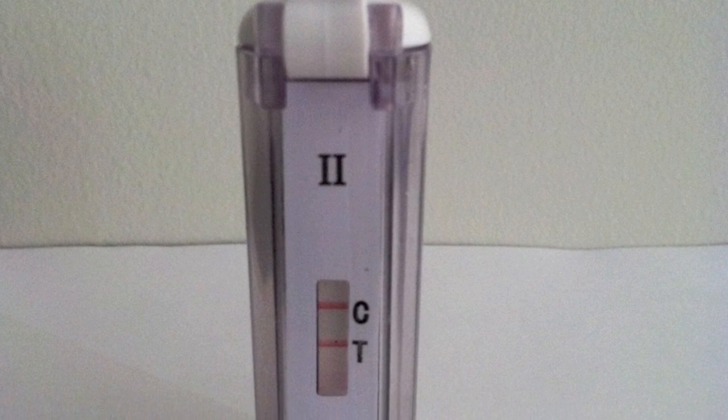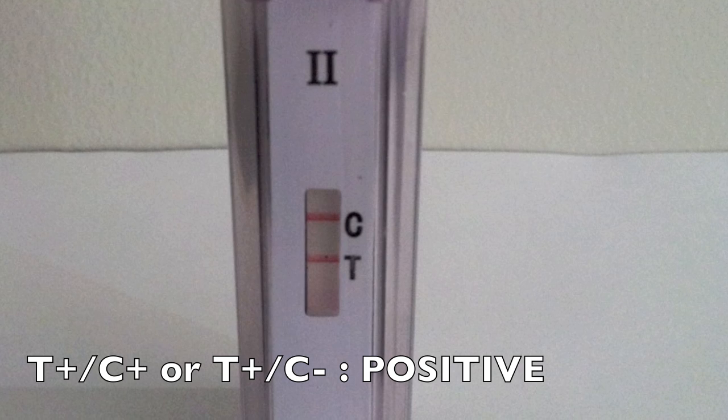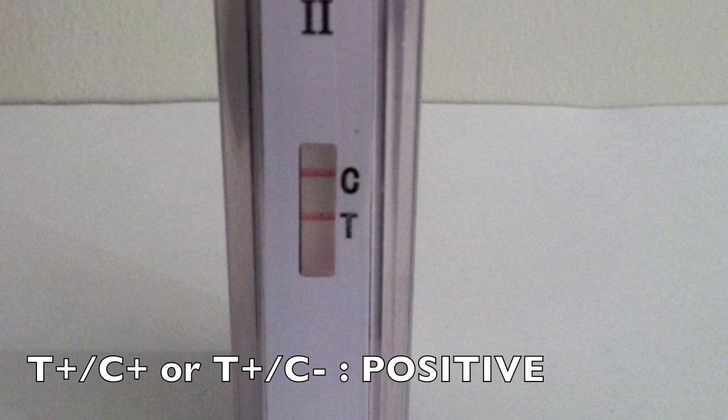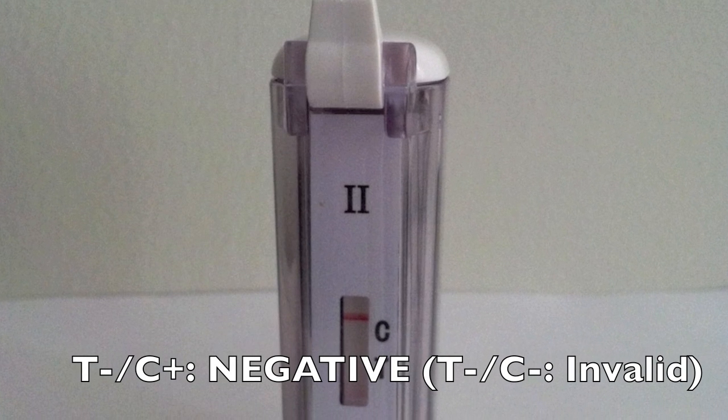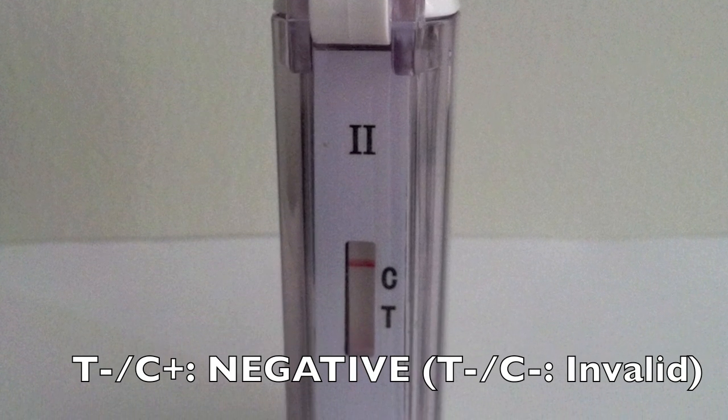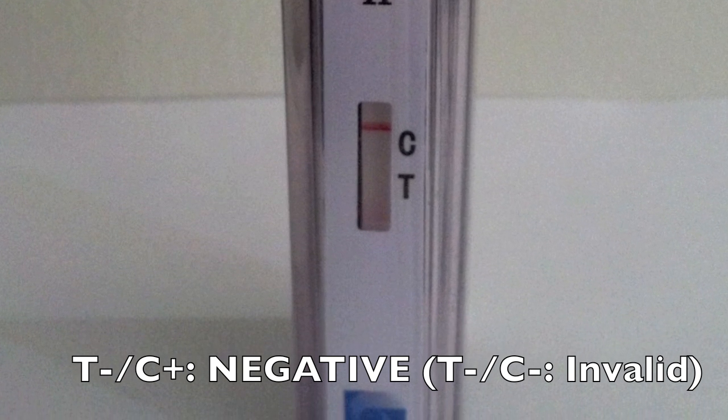Always read the test or T-line first. When a T-line is visible, report the assay result as HSV DNA detected or positive. When no visible T-line is present and a visible C-line eliminates the possibility of a false negative, the test result is negative.